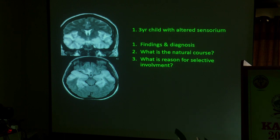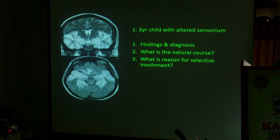I will read it for you. There are T2-weighted hyperintense lesions — bilateral symmetrical temporal lobe involvement, and also the frontal fibers involved as well, with a little bit of asymmetry. Whenever you see a patient with altered sensorium, a 3-year-old child, first and foremost you have to think in terms of bilateral temporal and frontal lobe diffusion-restricting T2 hyperintense lesions. Diagnosis will be?